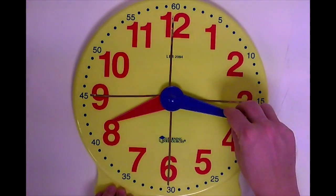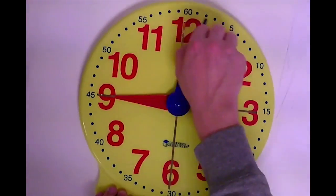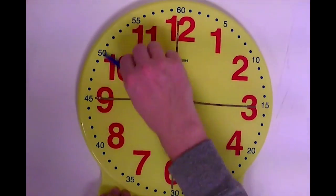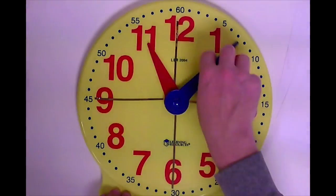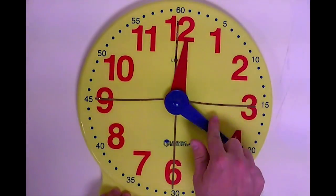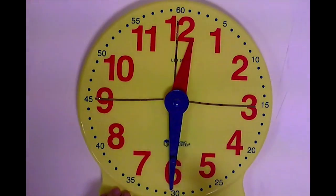So clockwise, if it ever says rotate it clockwise, clockwise is just the way that a clock normally rotates, which is always to the right. So it goes from one to two to three to four to five, six.